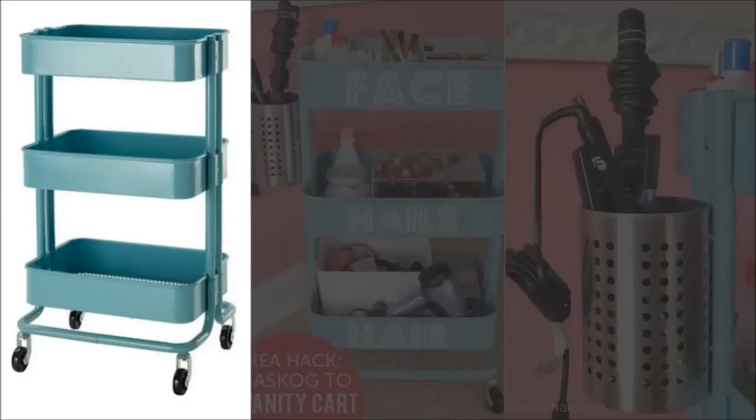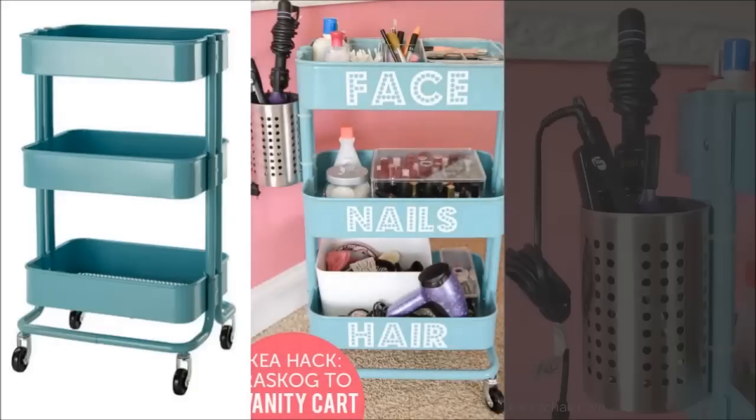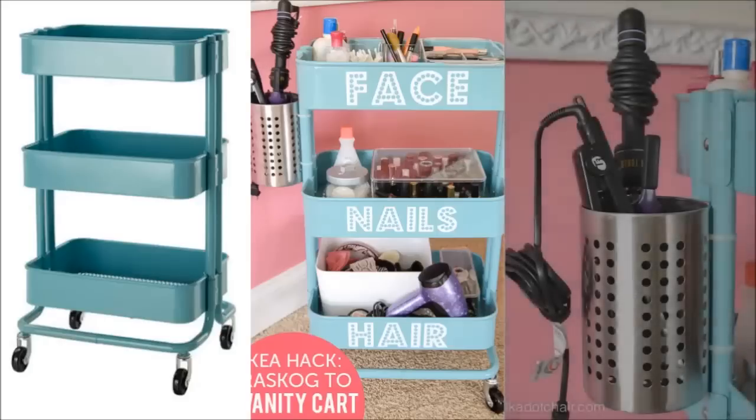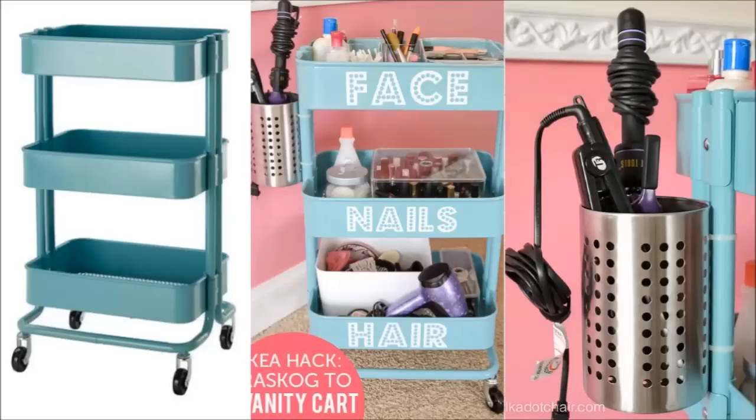Number 13. Rasgog Utility Metal Cart is a popular IKEA product. Melissa from Polka Dot Chair used the cart to categorize her beauty routine, and even doctored the side with a bin for her hot tools. Take a utensil holder from IKEA, and then attach it with zip ties to store your curling iron and flat iron.